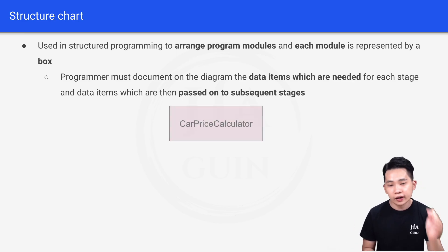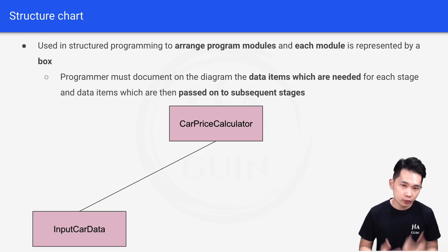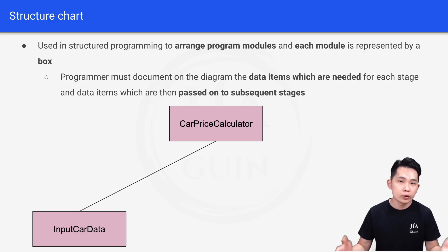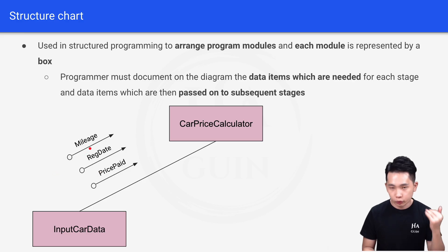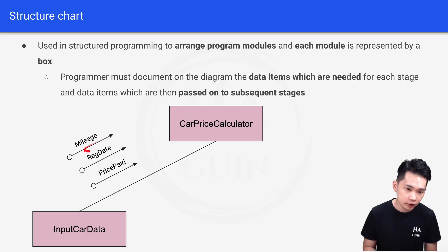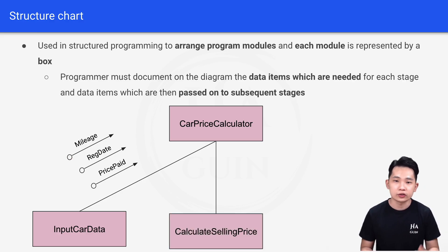We have this Car Price Calculator Program. The first module will be Input Car Data. Just looking at the module name, we know that this module inputs some car data into the program. The inputs would be the mileage, the registration date, as well as the price paid — these are the data items needed. We have this arrow here with the data item name. The next module will be Calculate Selling Price.